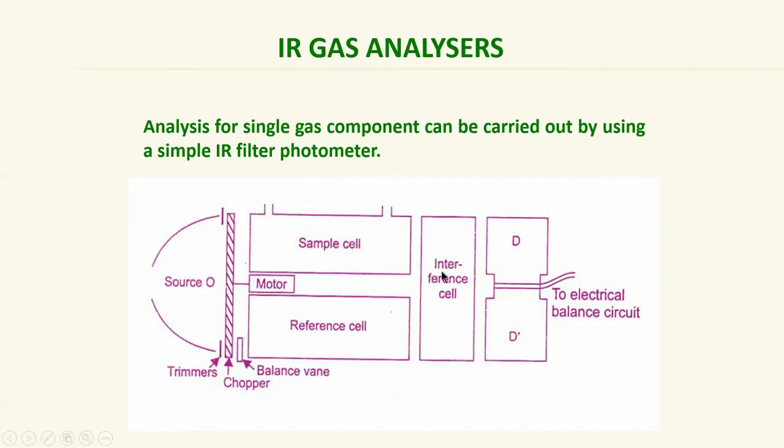The function of the interference cell is to eliminate the IR peaks or IR quantitation coming from other matrix components. D and D dash are the diaphragms filled with argon or xenon. This is a diaphragm and this is wired to an electrical balance circuit. This is the basic arrangement.